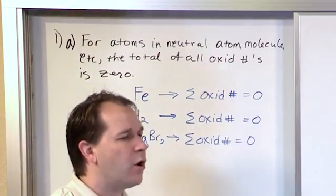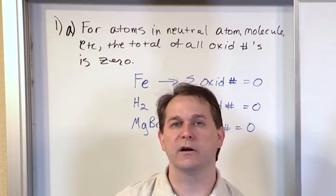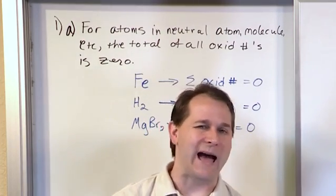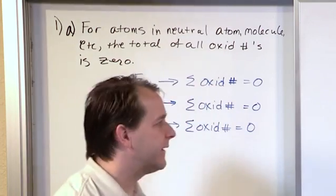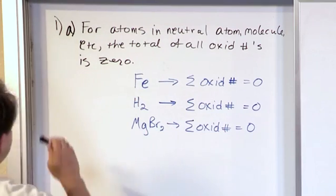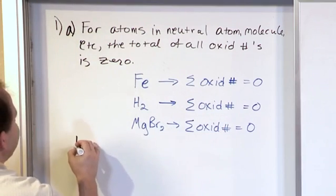So all rule 1A says is something that you already really kind of know from what we talked about before. The sum of all the oxidation numbers in a neutral atom or compound always has to be zero. All right, that's all that this is saying. And it's an important rule, and it's the very first rule on the list. Now, 1B is very similar. That's why they wrap it up in one.